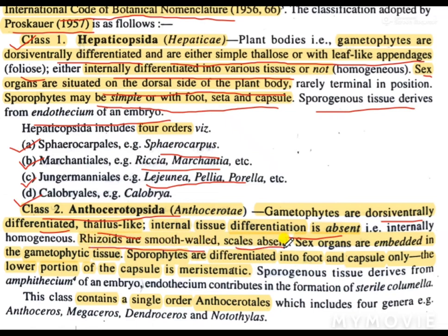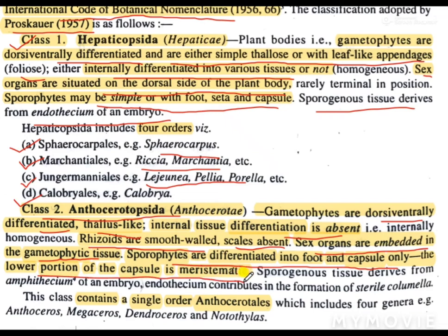The sex organs in this class are embedded in the gametophytic tissue. The sporophytes are differentiated into foot and capsule only; here we do not find seta. The lower portion of the capsule is meristematic in nature. Sporogenous tissue is derived from amphithesium of an embryo. Endothesium contributes to the formation of sterile columella. So, in Hepaticopsida the sporogenous tissue is derived from the endothesium, but in Anthocerotopsida it is derived from the amphithesium.